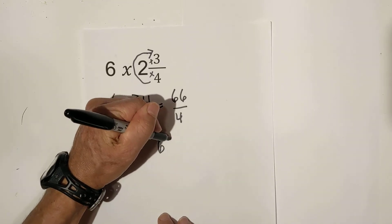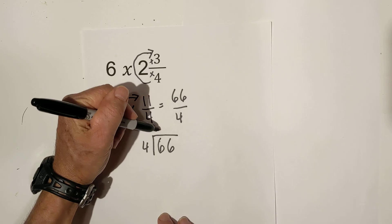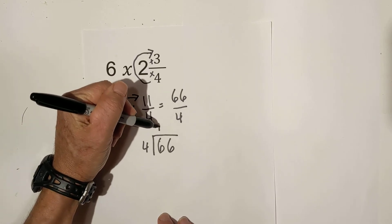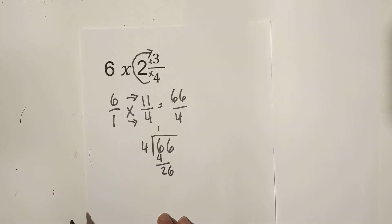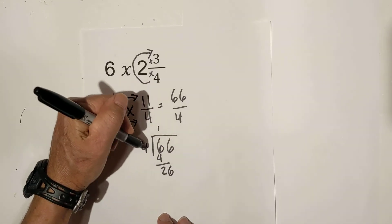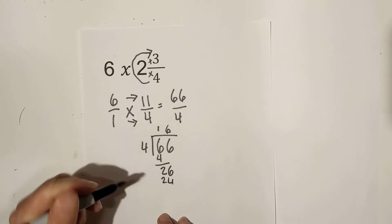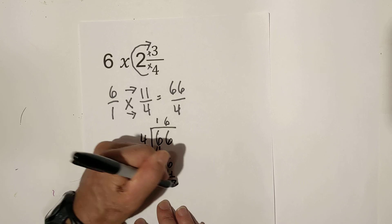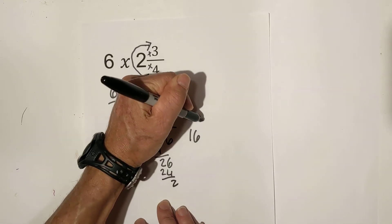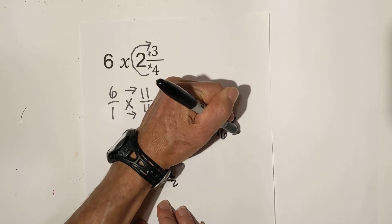Now let's convert it into a mixed number. 4 goes into 6, 1 time. 1 times 4 is 4. Bring down the 2. And then 4 goes into 26, 6 times. 6 times 4 is 24. Looks like we have a remainder of 2. So now it's 16 and 2 fourths, which is 16 and a half.